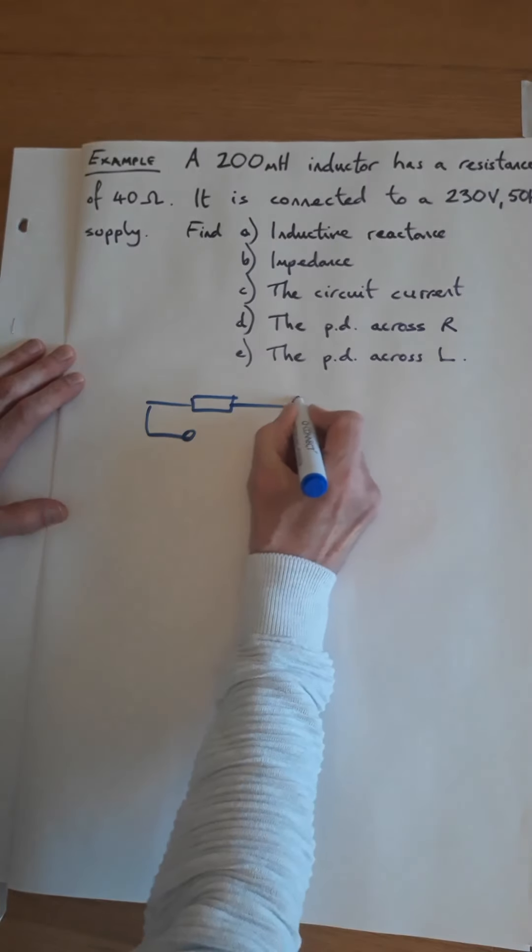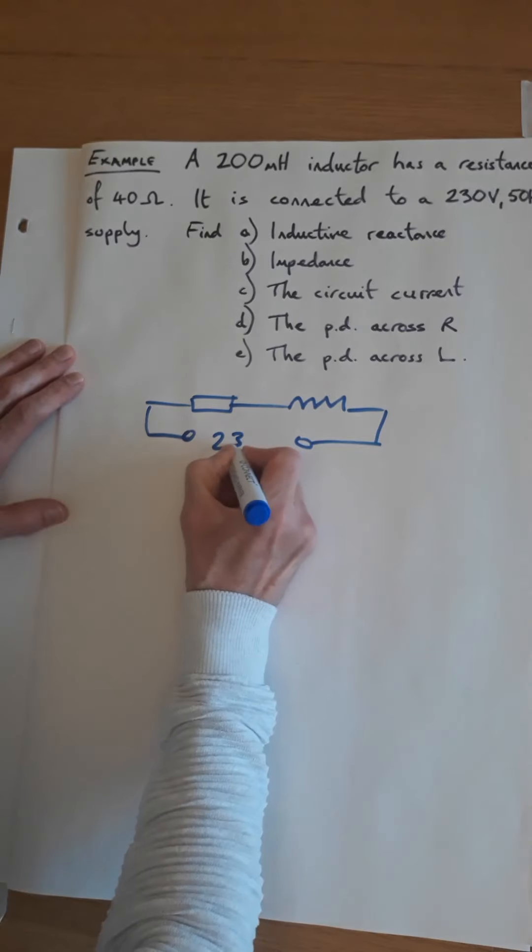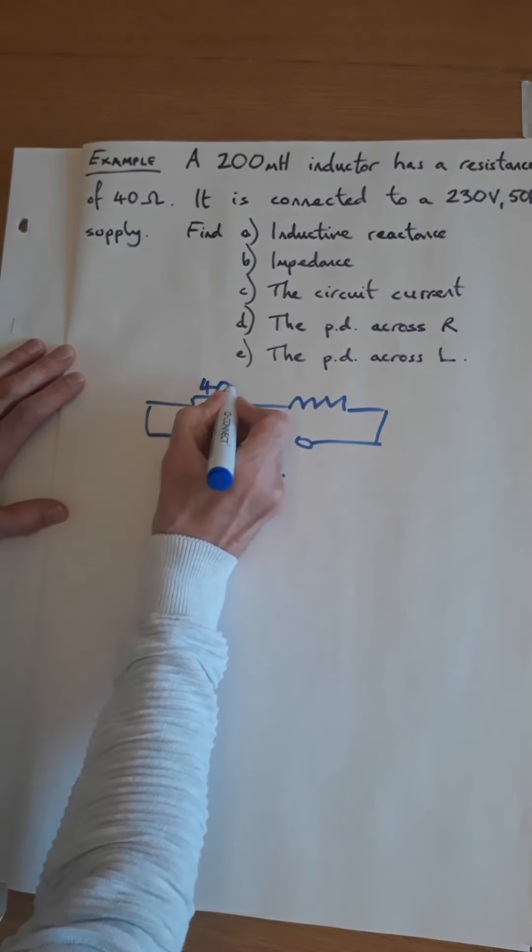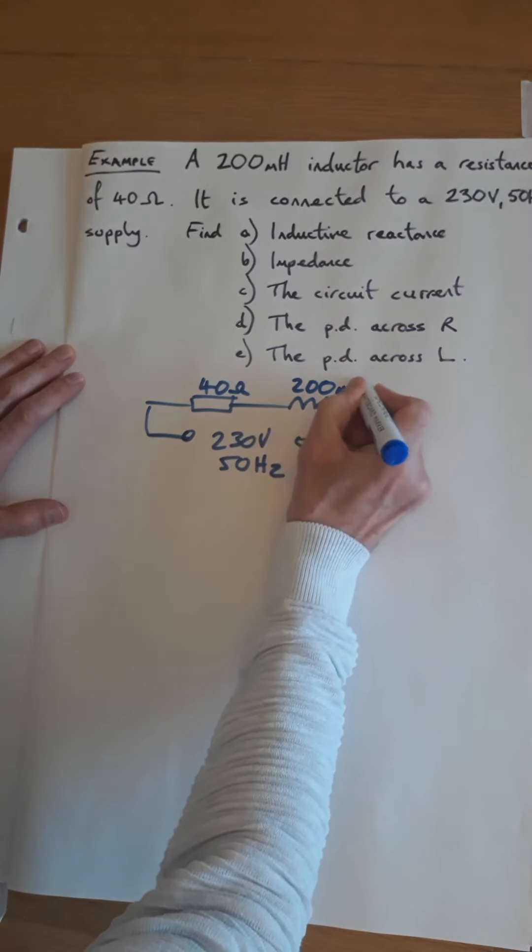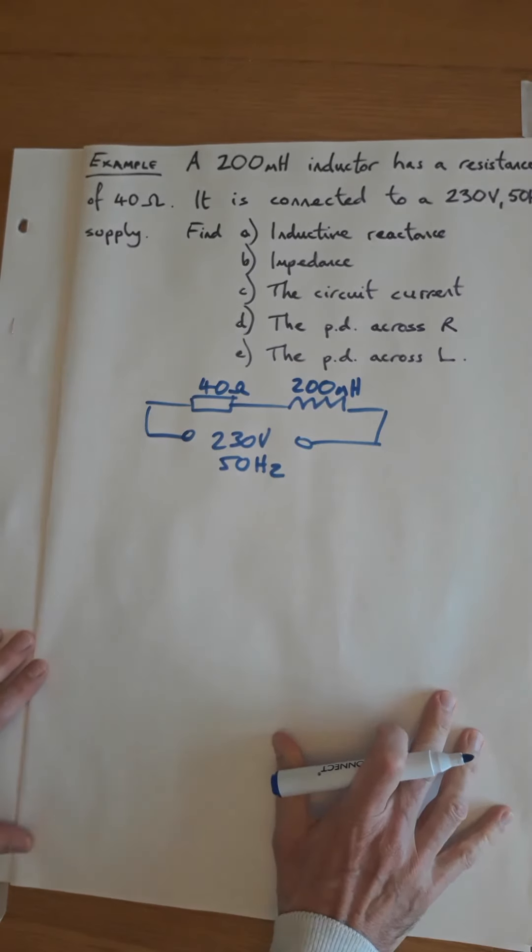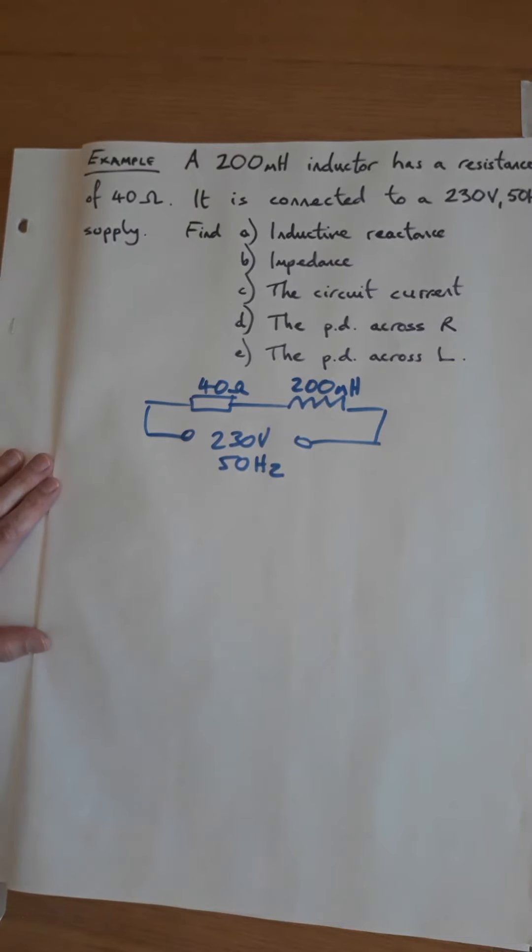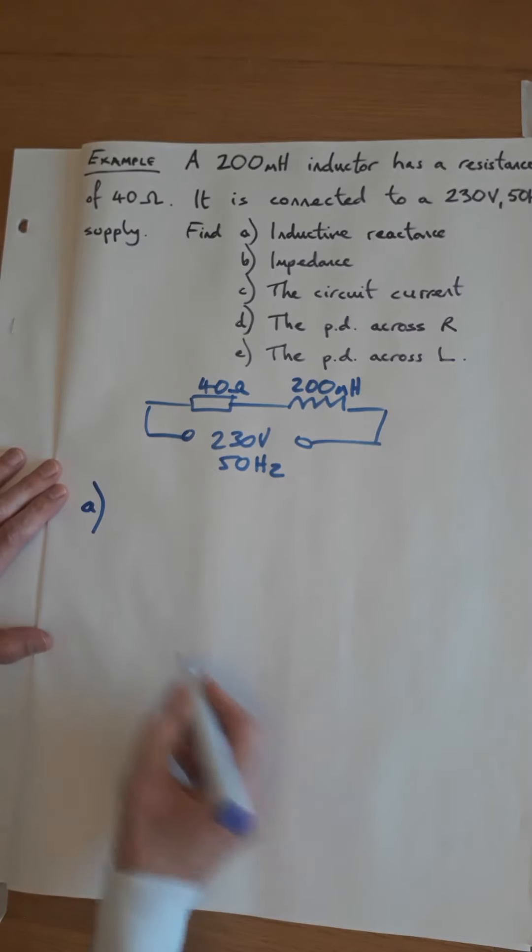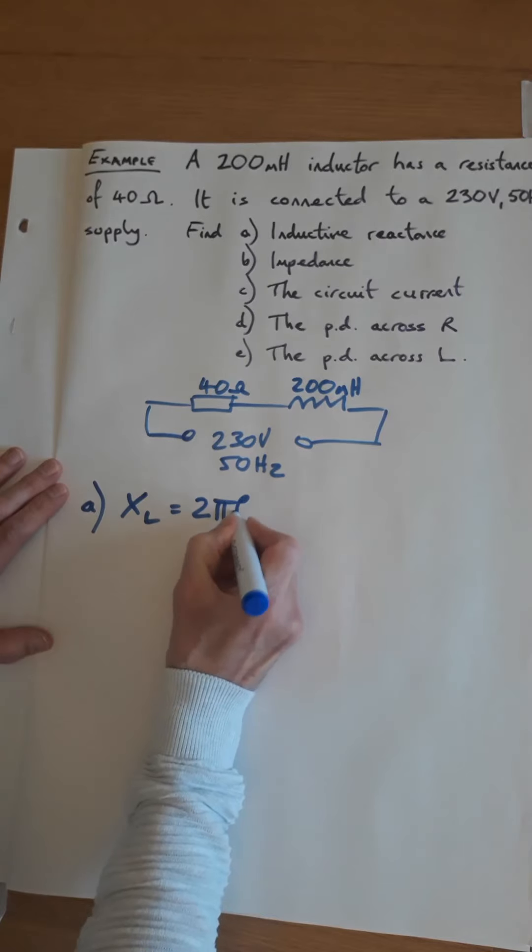So let's do a very quick sketch of the circuit. So 230 volts 50 hertz. The resistance of the coil was 40 ohms, and this was 200 millihenries. So I'm going to work through this quite quickly and you can then stop the video at any point and check your way through it.